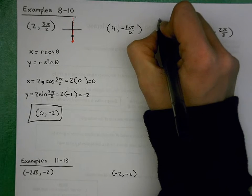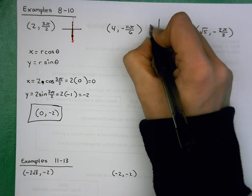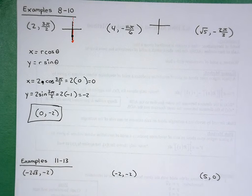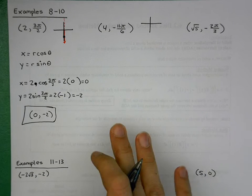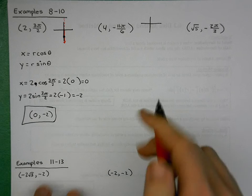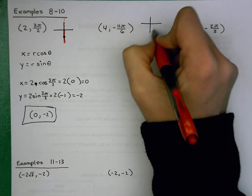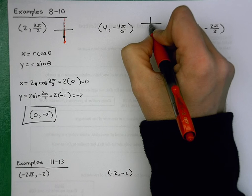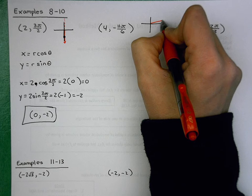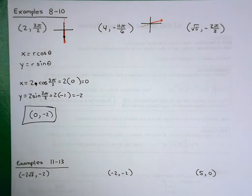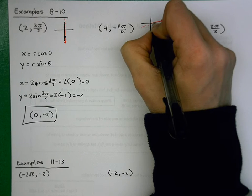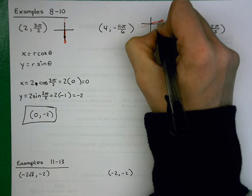Next up we have (4, −11π/6). If this is your extra practice, I recommend you pause the video and try them on your own, then check your answers when you're ready. For −11π/6, where would that radial line be? That'll be in the first quadrant. We have a positive r, so we're going out 4 along that line.